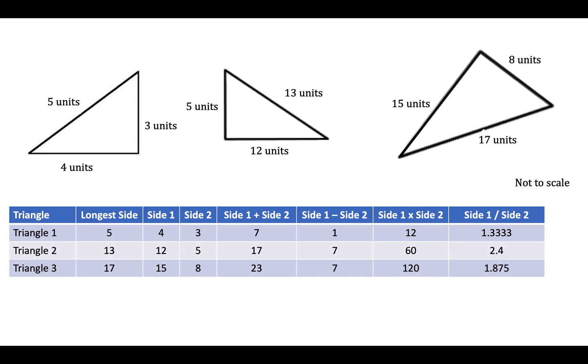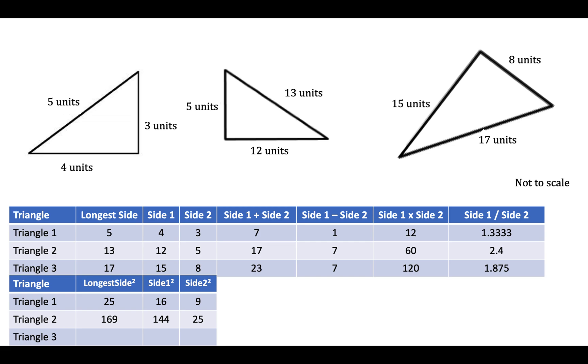I wonder if we square each of the sides what would happen. For triangle one we've got 5, 4, and 3, so squaring those would give us 25, 16, and 9. For triangle two, when we square the length of the sides we would get 169, 144, and 25. And triangle three, we're going to get 289, 225, and 64.